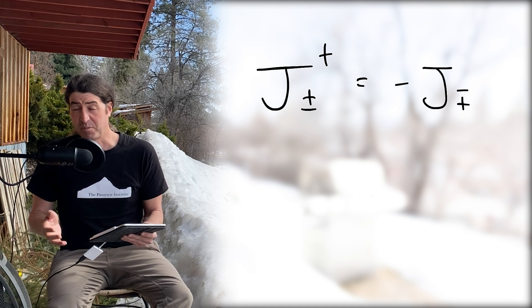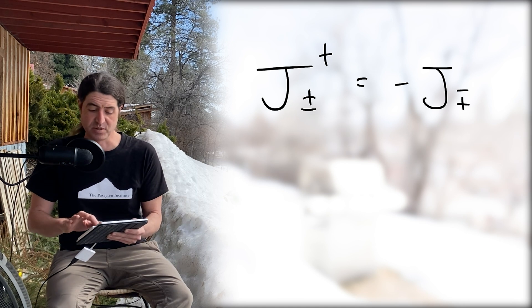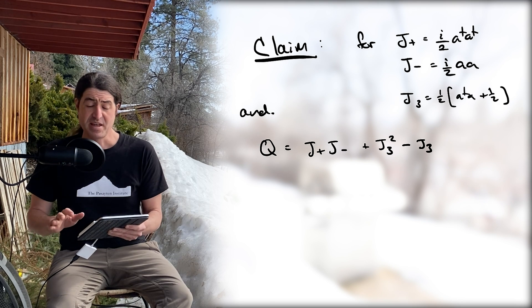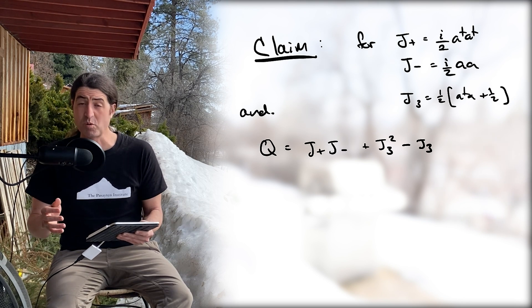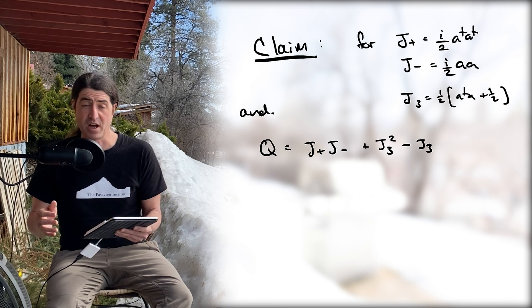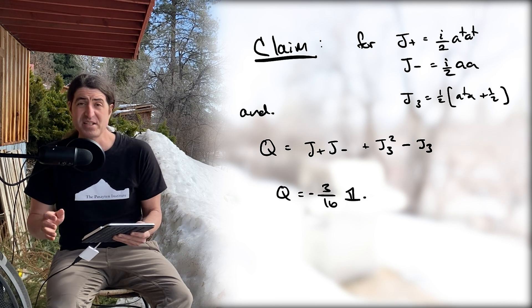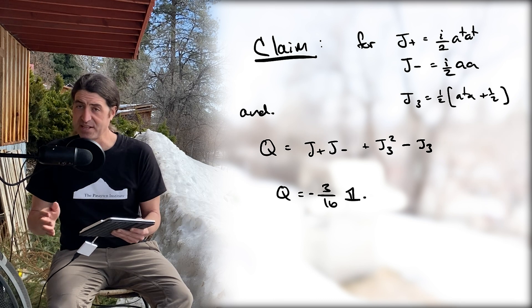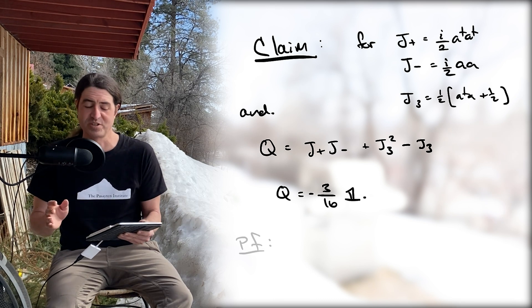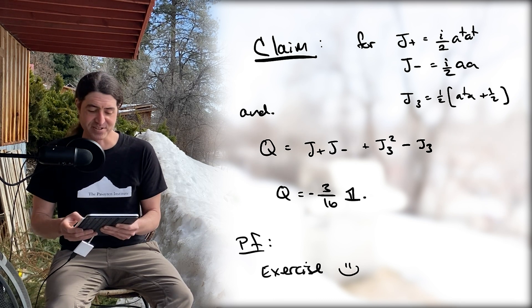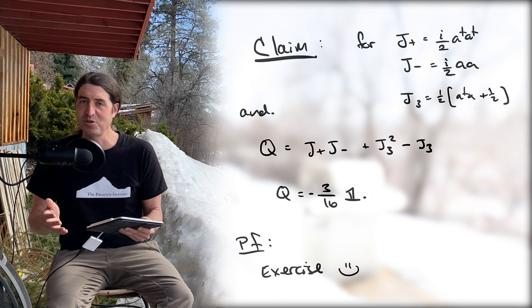Indeed, J3 may be a unitary operator, but J+ or J- are anti-unitary. This brings us to a second claim: the operator Q, the quadratic Casimir of this Lie algebra using our explicit constructions, is equal to minus three sixteenths times the identity matrix. Proof is again an exercise for you.